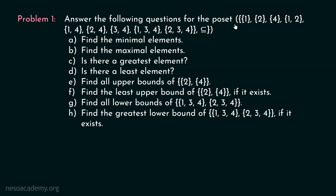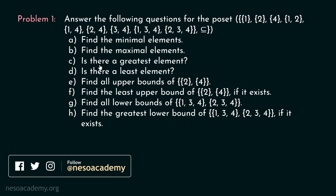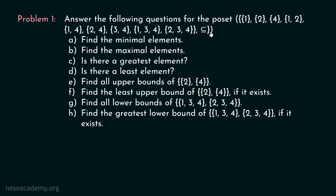Here is problem one. Answer the following questions for the poset which is available over here. Find the minimal elements. Find the maximal elements. Is there a greatest element? Is there a least element? Find all upper bounds of this particular set. Find the least upper bound of this set if it exists. Find all lower bounds of this set. Find the greatest lower bound of this particular set if it exists. We have to answer all the parts of this question.